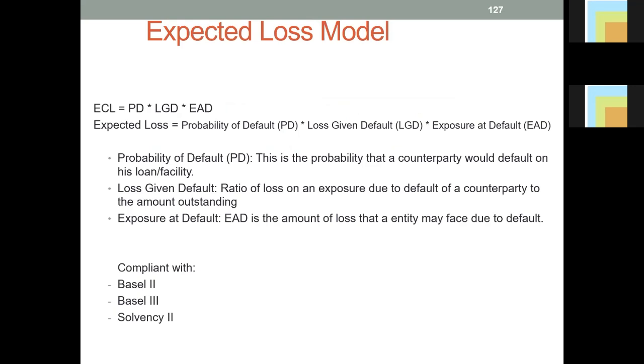The one we make impairment provision for is only the expected credit loss. However, with every credit loss or credit risk, there is an expected portion and an unexpected portion.